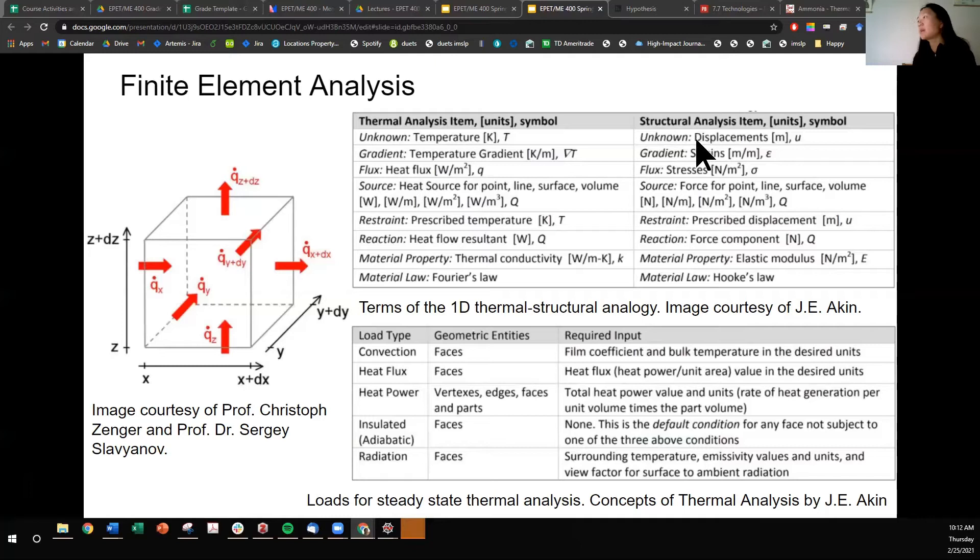So in structural analysis, instead of caring about displacements, we care about temperature change. Instead of the gradient, which is the change being in strain, we're thinking about temperature gradients. Instead of stresses, we're thinking about heat flux. Instead of forces, we're thinking about heat sources. Instead of a prescribed displacement or some kind of boundary constraints, we're thinking about a temperature constraint. If you know for sure that this surface is going to be at this temperature, it would be a constraint. Instead of force components, we're thinking about heat flow resultants. Instead of elastic modulus, we're thinking about thermal conductivity. Instead of Hooke's law, we're using Fourier's law.